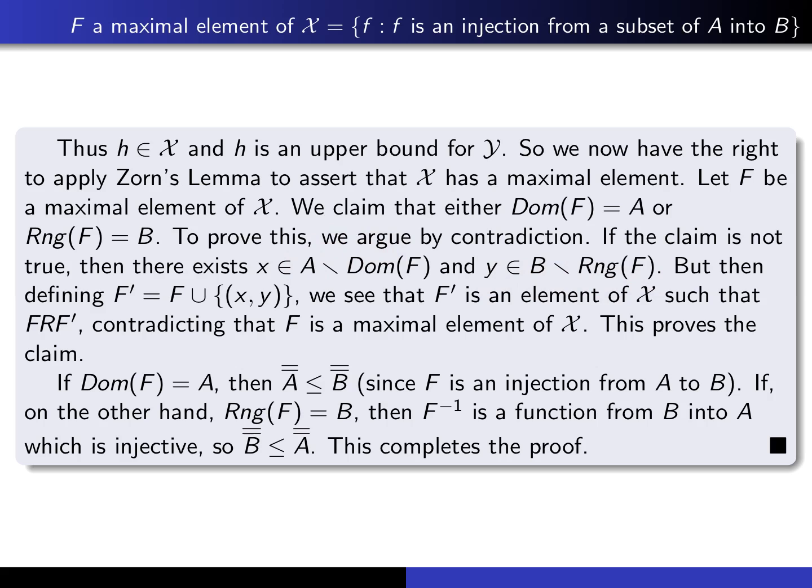We create a new function that is a proper extension of capital F and still an injection. We adjoin the pair x, y to F — defining F prime on the domain of F union {x}, letting F prime agree with F on the domain of F, and setting F prime(x) equal to y. Since x, y does not lie in capital F, this is a proper extension of F, which contradicts the fact that F is supposed to be a maximal element of X.